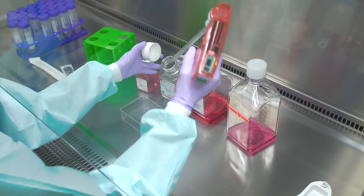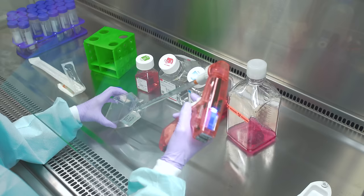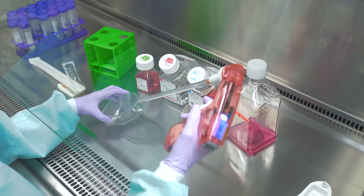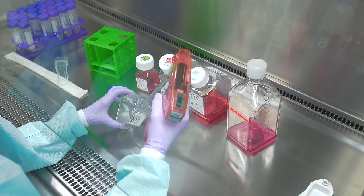Rinse the cells with a balanced salt solution such as DPBS. Make sure to use a salt solution without calcium and magnesium, as these may inhibit your cell dissociation reagent. After rinsing the cells, remove the salt solution.